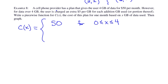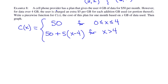Once you hit more than 4 gigabytes, you're charged $5 based on the extra gigabytes over 4, plus the $50. So it's 50 plus 5 times x minus 4. For example, if you used 7 gigabytes, you wouldn't get charged $5 for all 7 — only for the 3 gigabytes over 4. In algebra, if x is over 4, what's over 4 is x minus 4. This works for any x greater than 4.